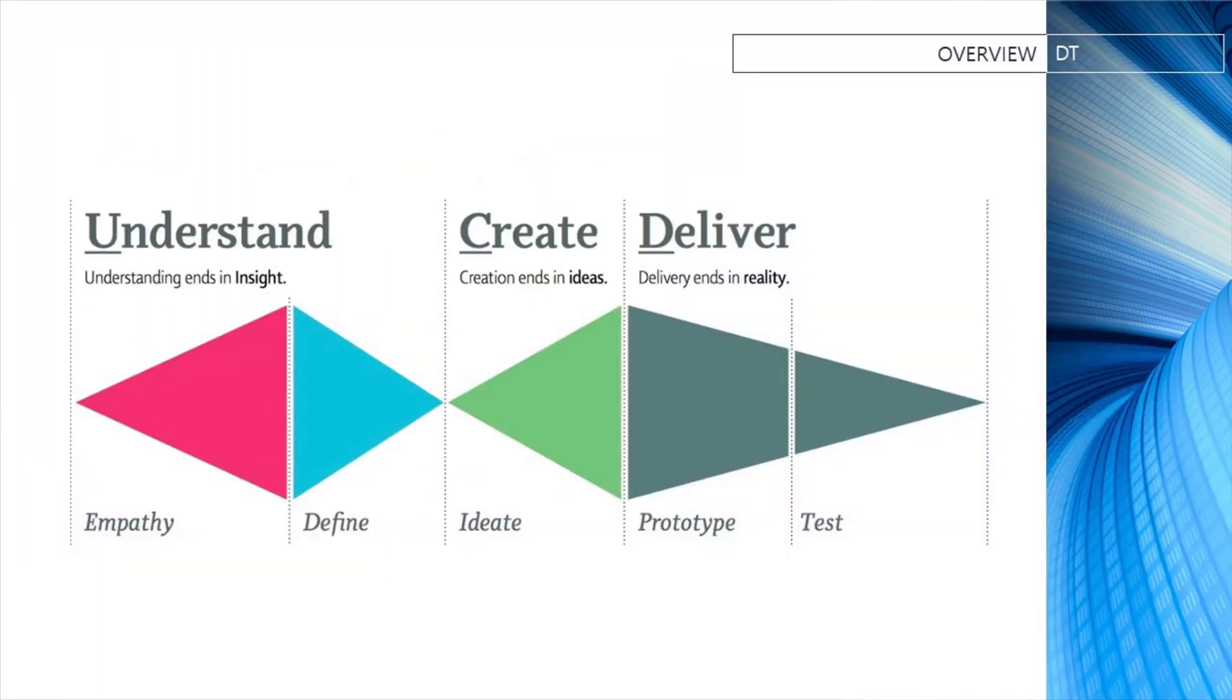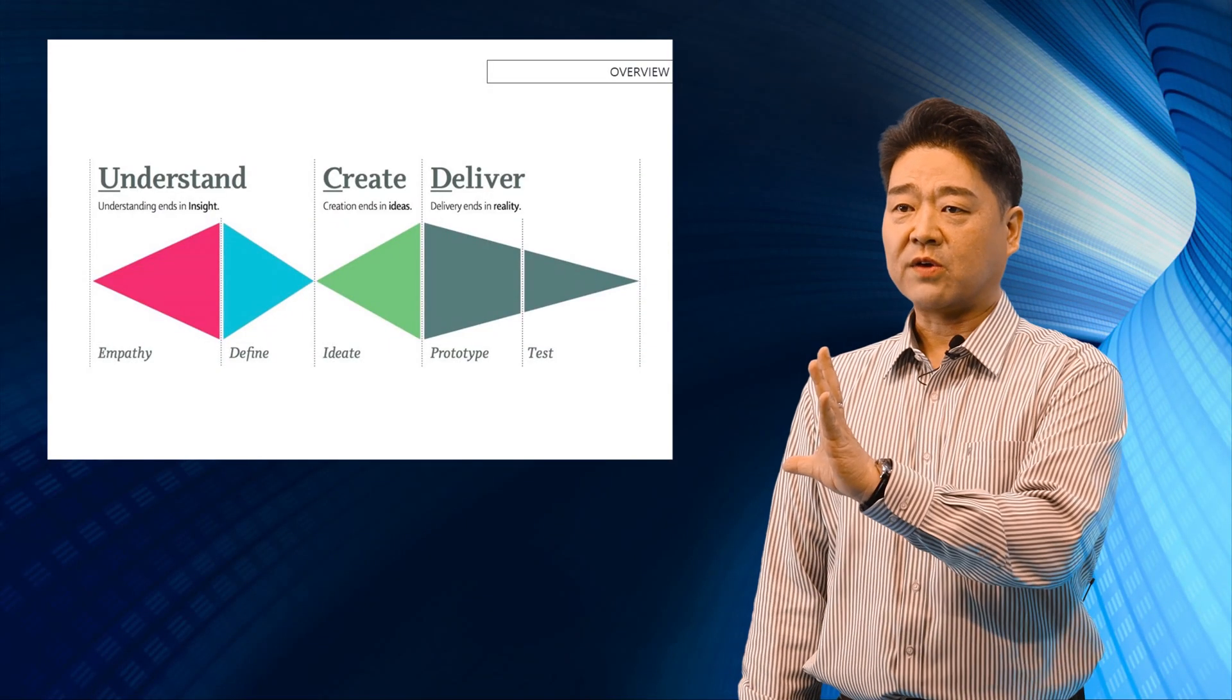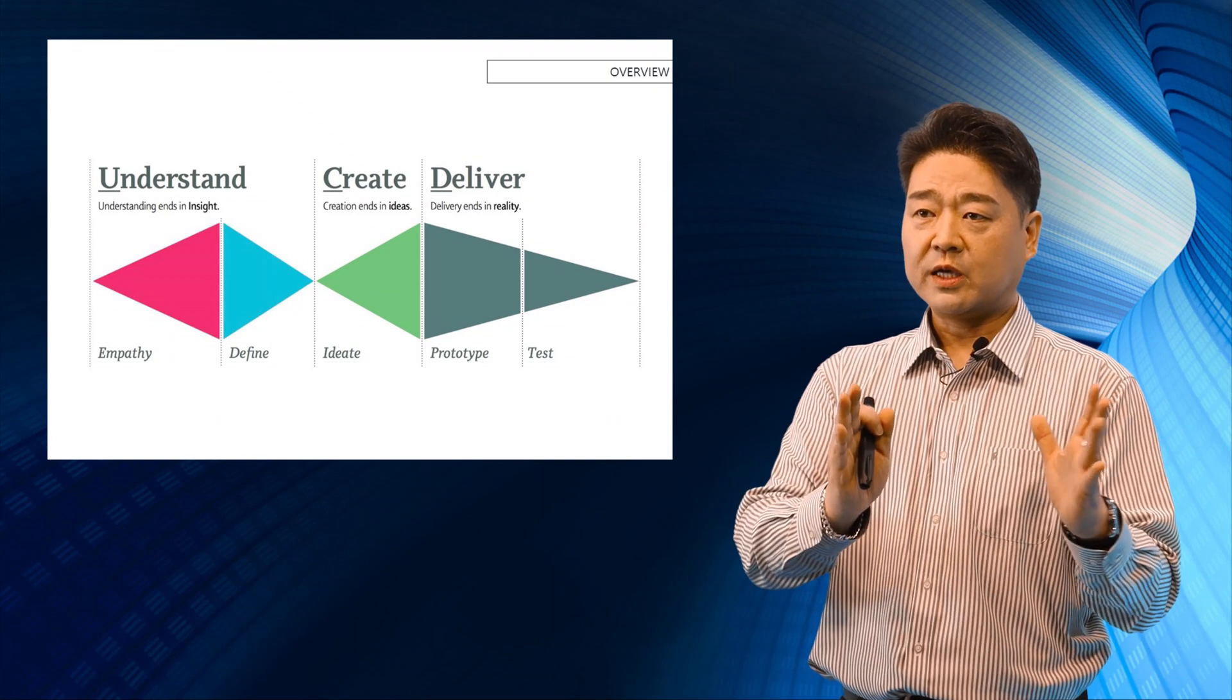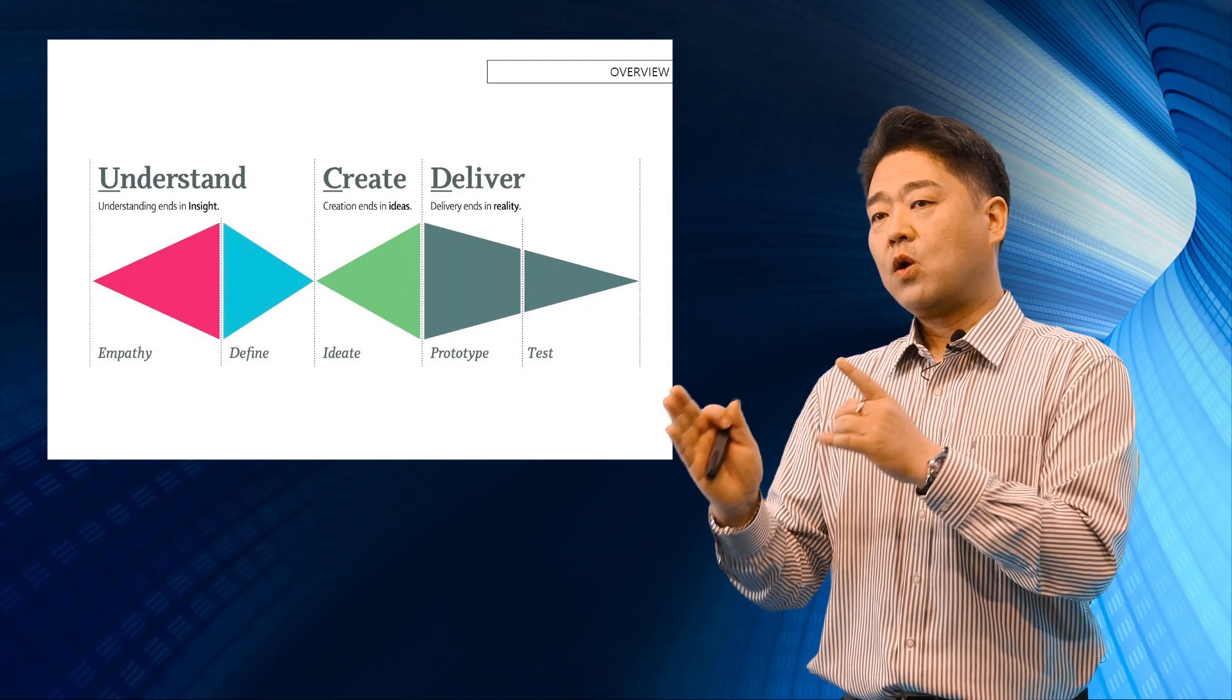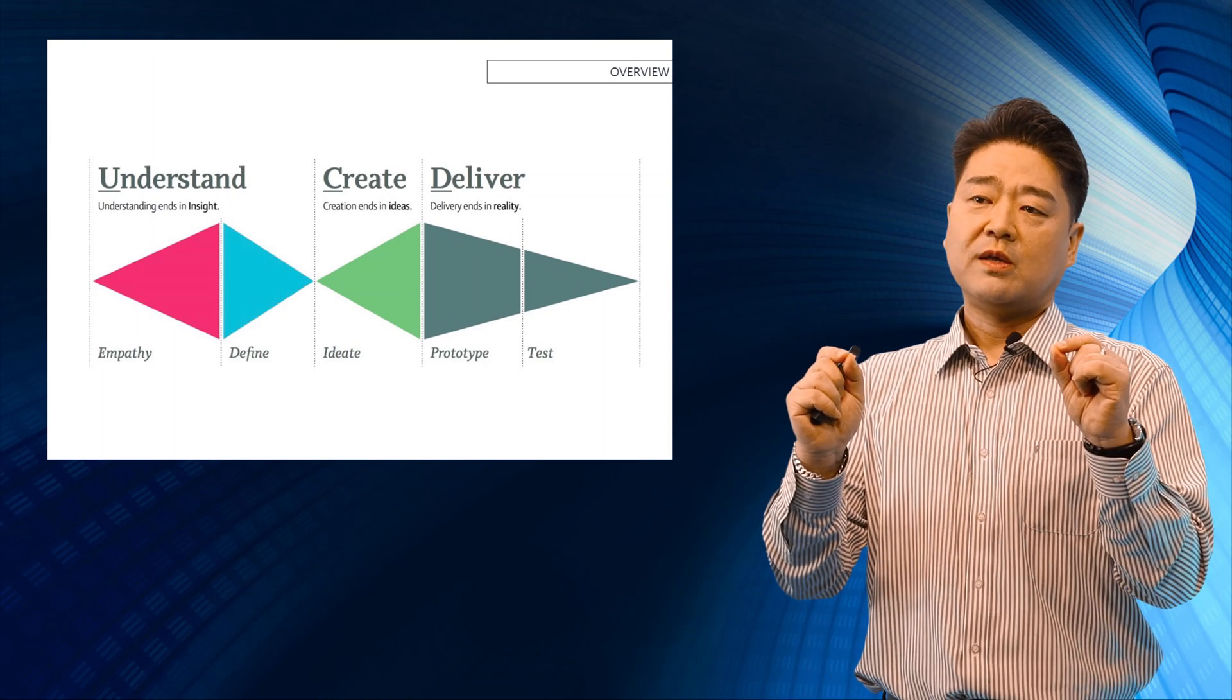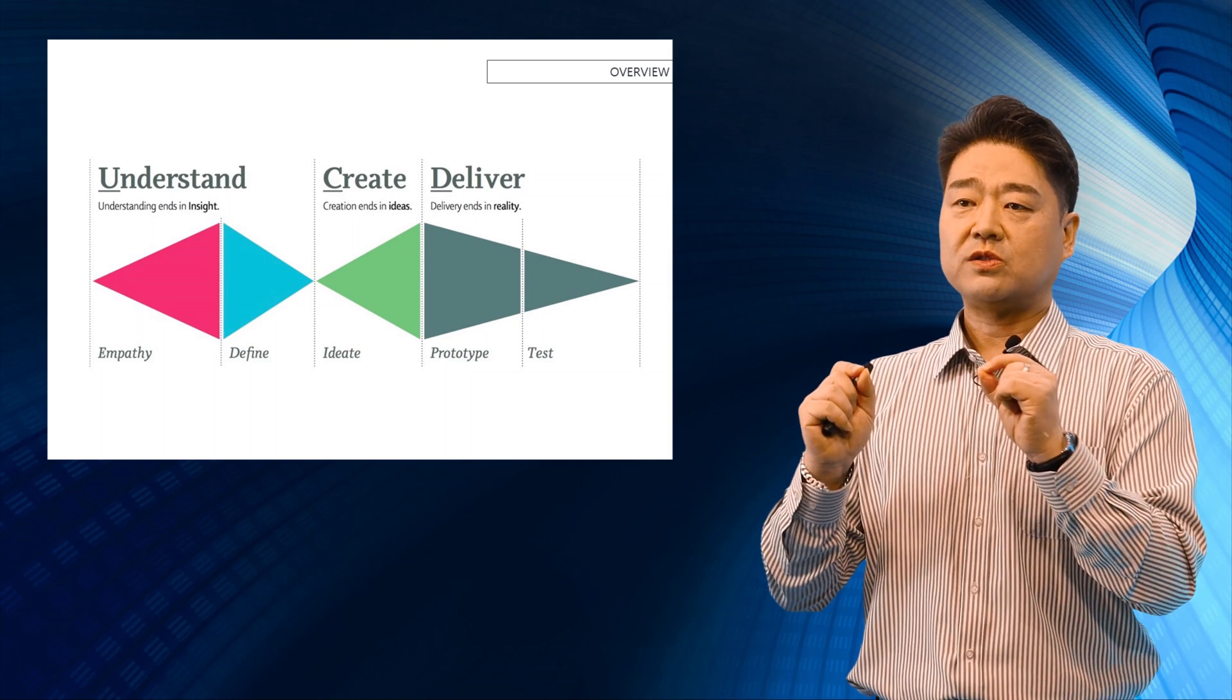Now let's move on to something that we already know. There's an understanding part, create and deliver. So this is pretty much what you're familiar with. Empathy stage and then define, idea, prototype, and test. One thing you have to understand is, let's look at these triangles. They represent divergence stage and convergence stage.